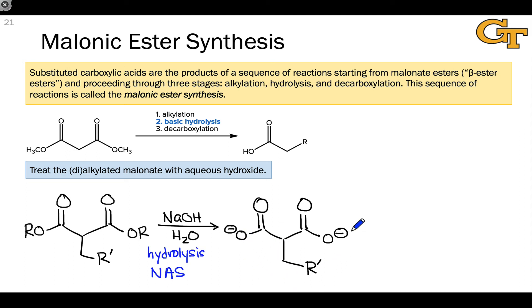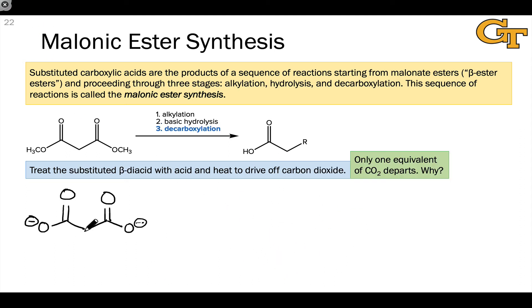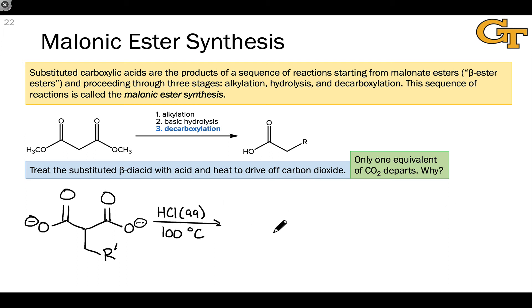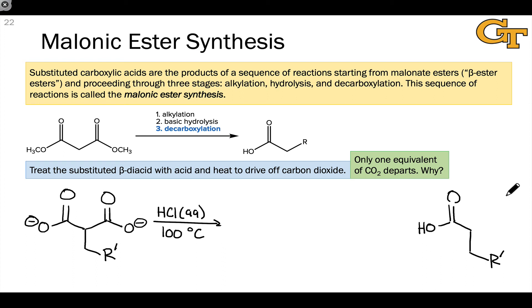At this point, we carry on this dicarboxylate to the final stage. Typically, we don't even isolate the dicarboxylate, instead opting to treat it directly with acid and heat to drive off carbon dioxide — something like aqueous hydrochloric acid at high temperatures, say boiling water at 100 degrees C, to affect decarboxylation. We end up with a carboxylic acid as the final product. Notably, we have two carboxylic acid groups in the starting material, but only one equivalent of CO2 departs, leaving us with a carboxylic acid. Why don't both groups depart?